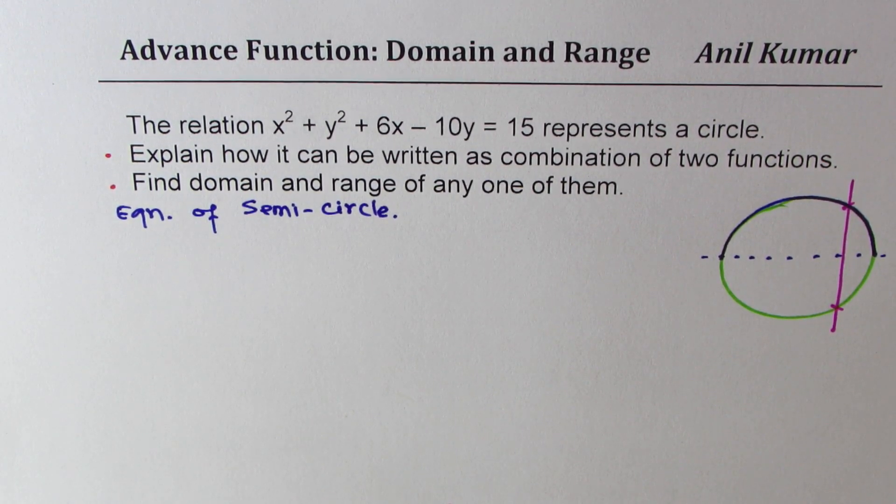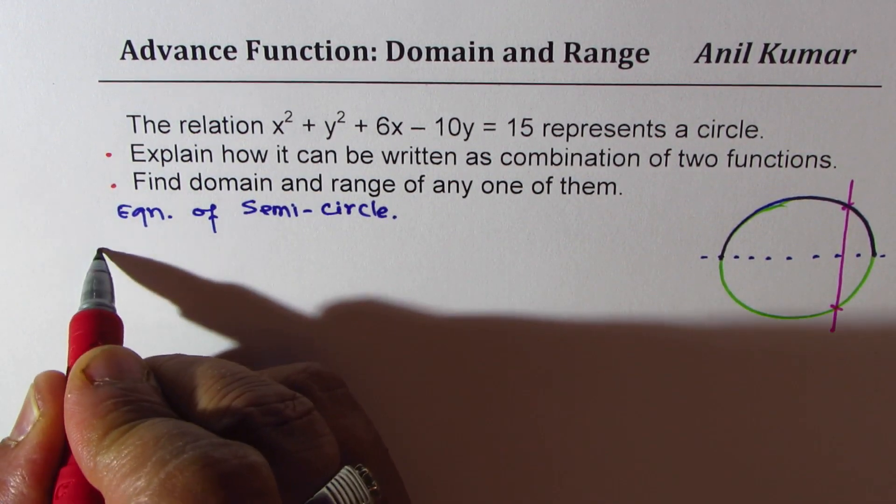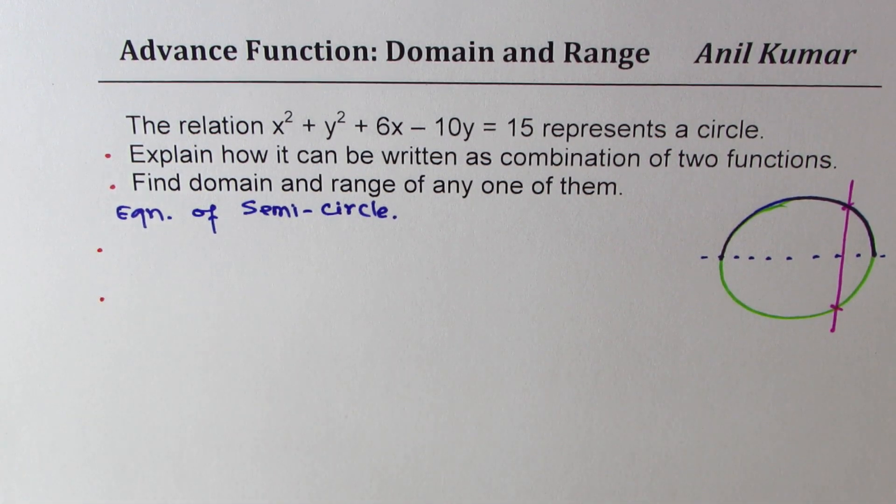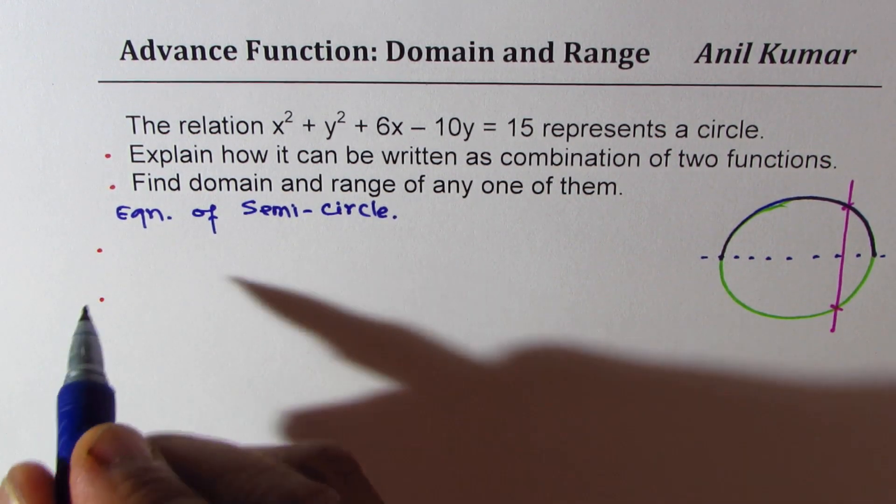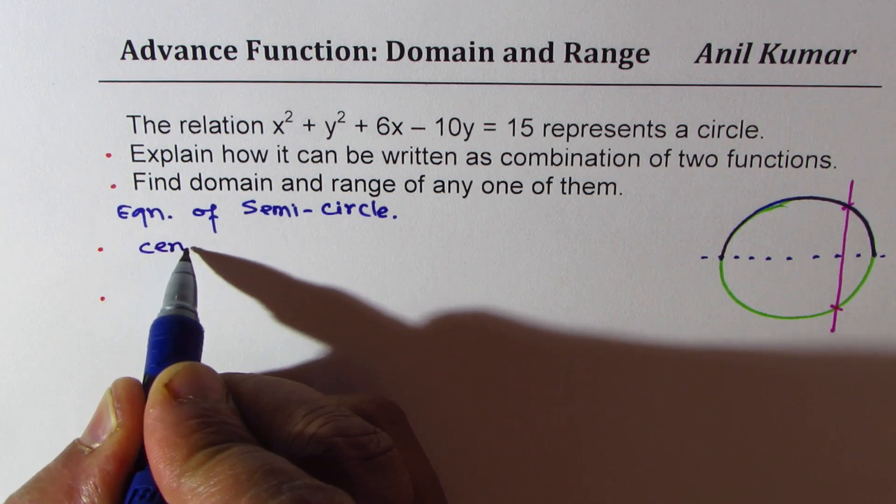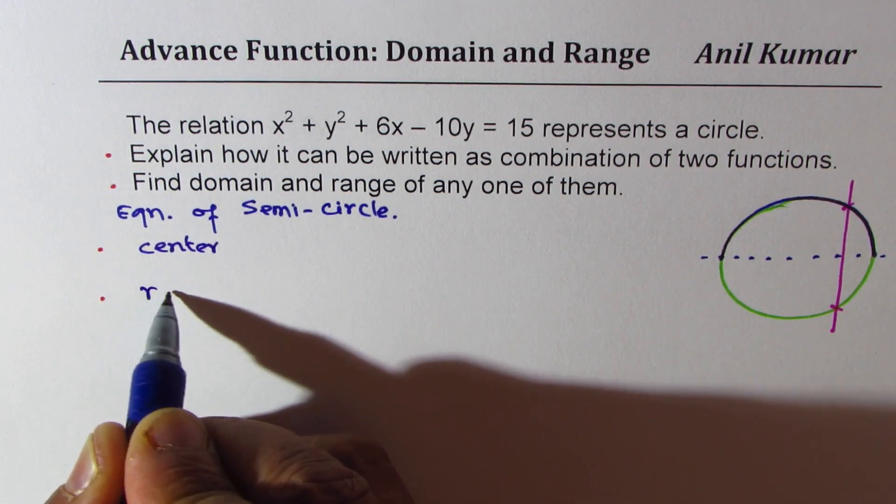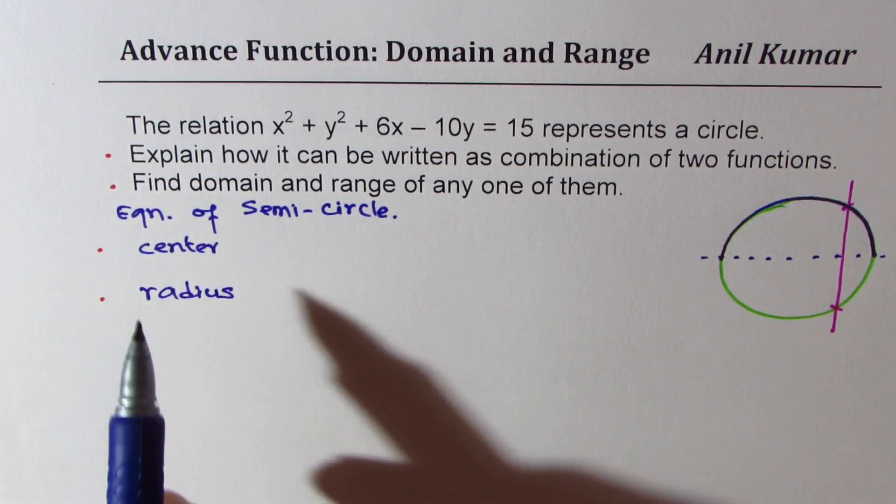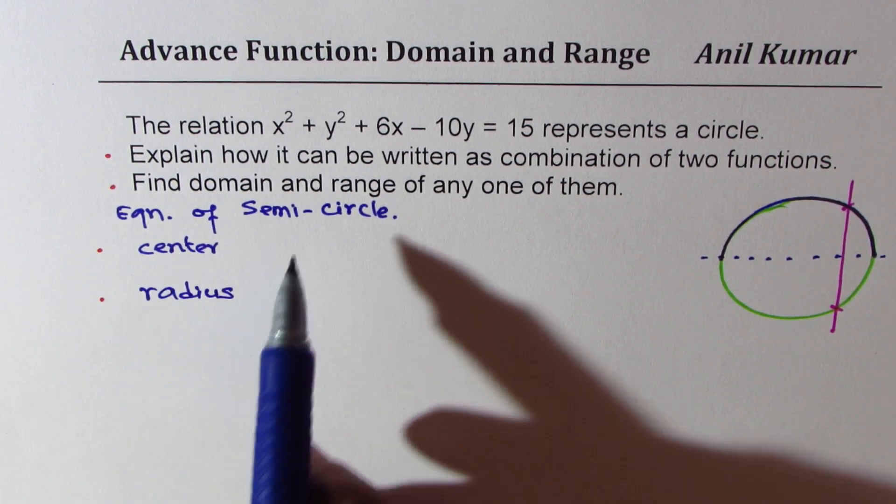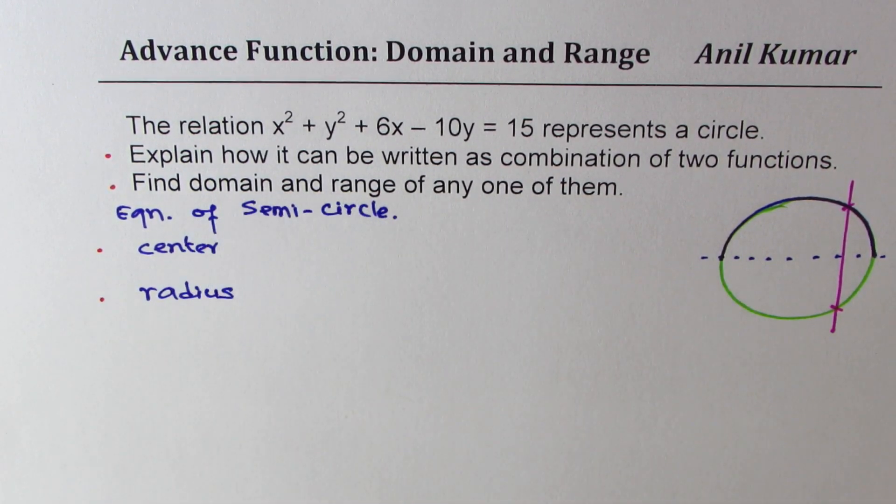So for that, what do we need? We need to find a couple of things. We need to find the center and the radius. Once we get center and radius, we will also be able to find domain and range.